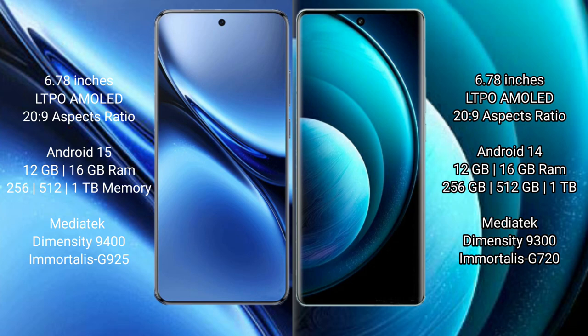The Vivo X200 Pro comes with 12GB or 16GB RAM, 256GB or 512GB or 1TB internal storage, a MediaTek Dimensity 9400 processor, and GPU G925. The Vivo X100 Pro comes with 12GB or 16GB RAM, 256GB or 512GB or 1TB internal storage, a MediaTek Dimensity 9300 processor, and GPU G120.